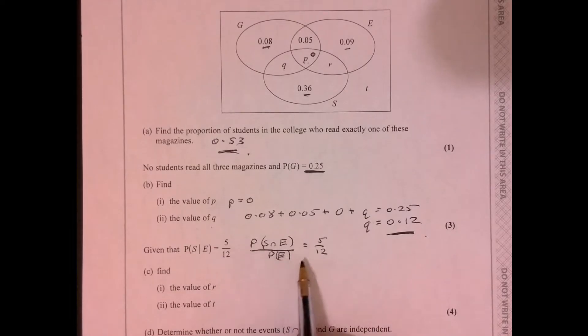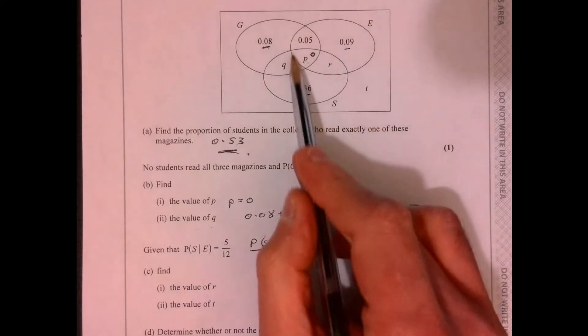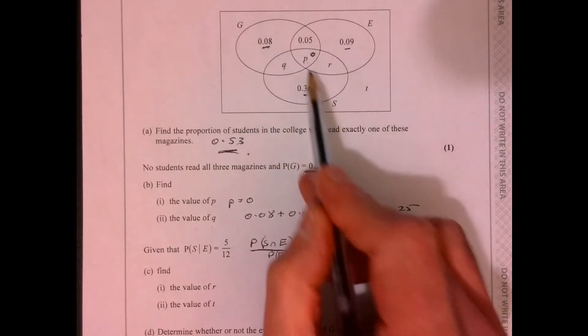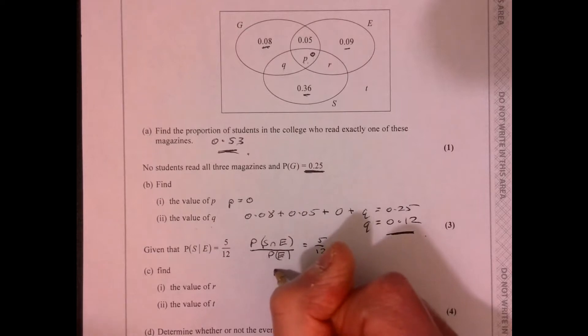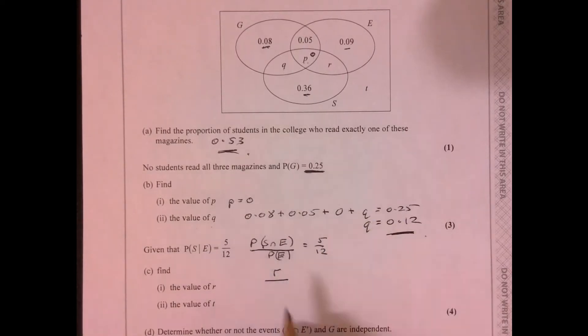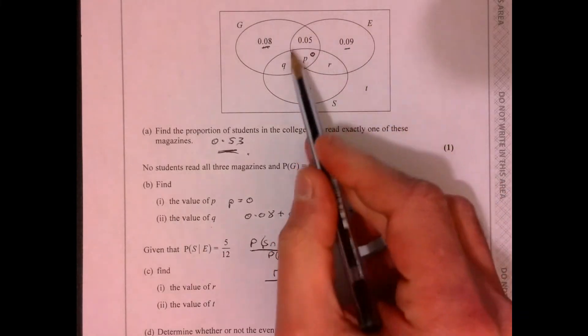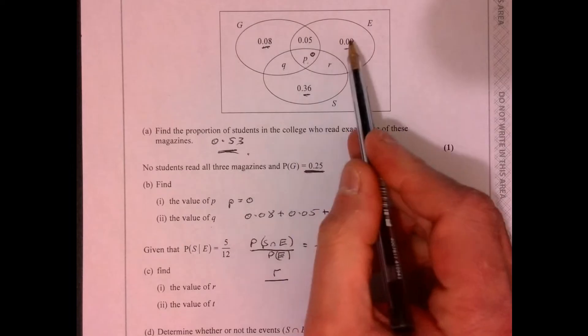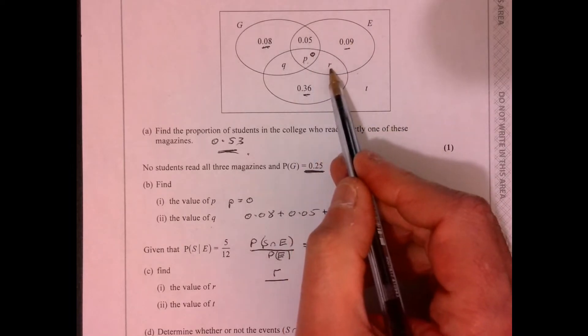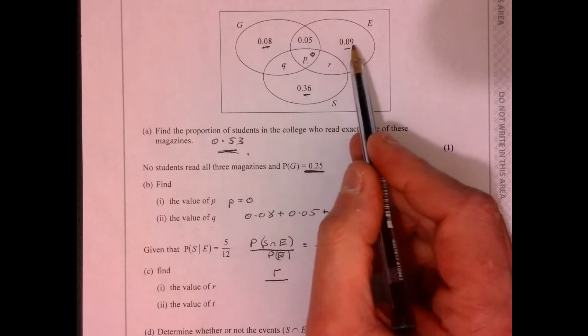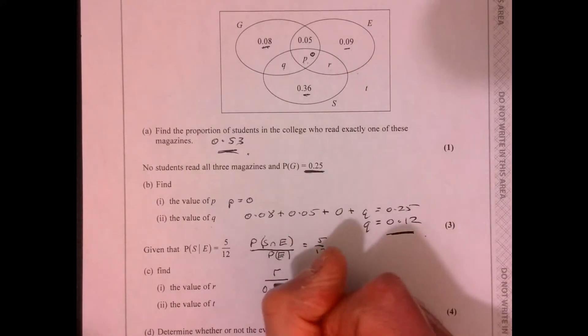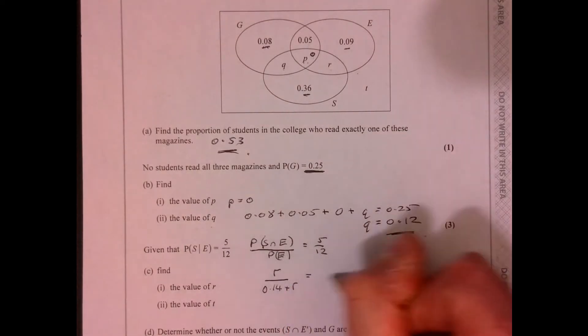So what is the probability of S intersection E? Well, if I look over here, we've got E, we've got S. So it's these two bits. So basically, it's just R. All right, so that bit's going to be R. Now, what's the probability of E? Well, it's all of this circle here, or this region, I should say. So it's this one, plus this one, plus our zero, plus our R. So it's 0.14 plus R. And we know that that lot is equal to 5 over 12.